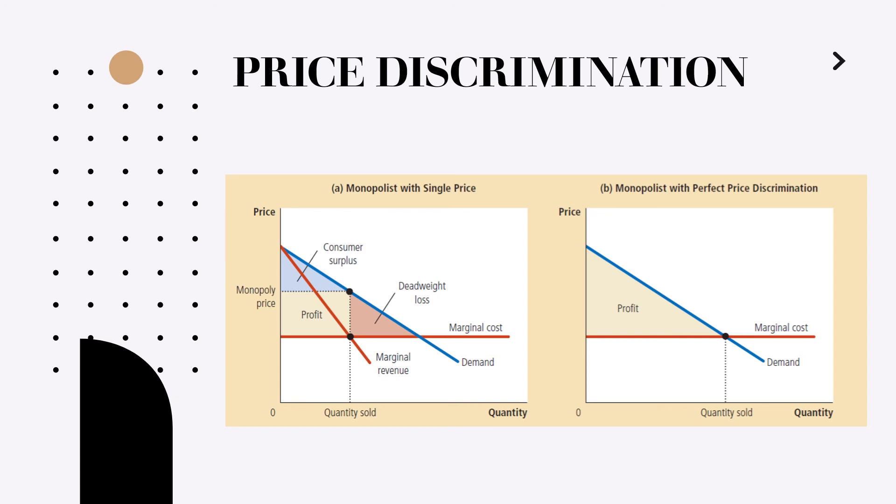Because consumer surplus equals zero, total surplus now equals the firm's profit. Comparing these two panels, you can see that perfect price discrimination raises profit, raises total surplus, and lowers consumer surplus.